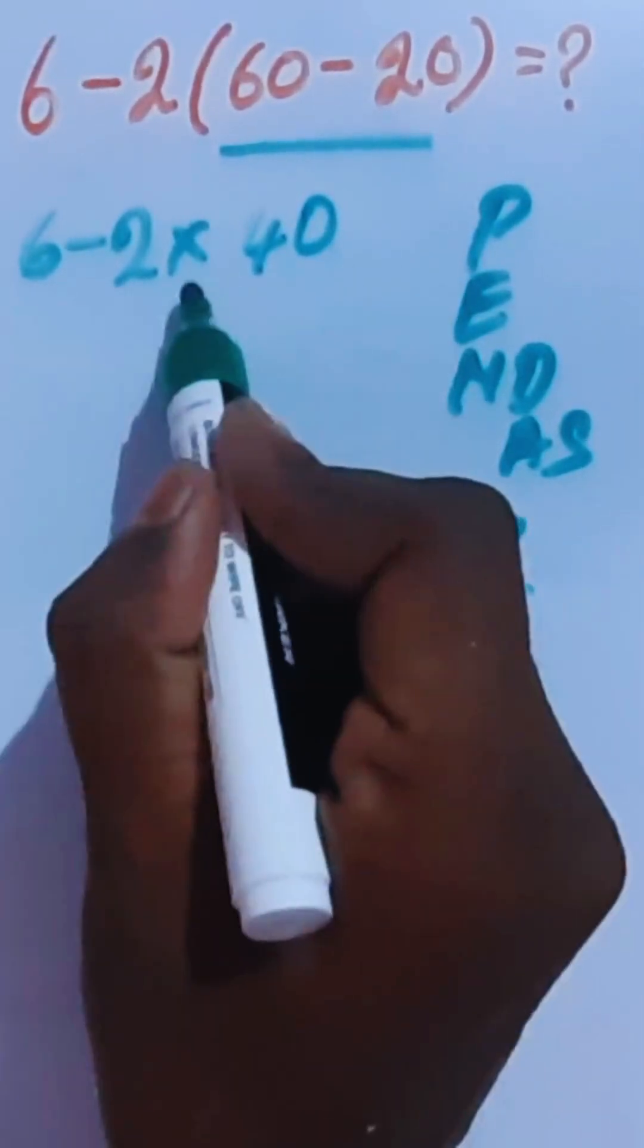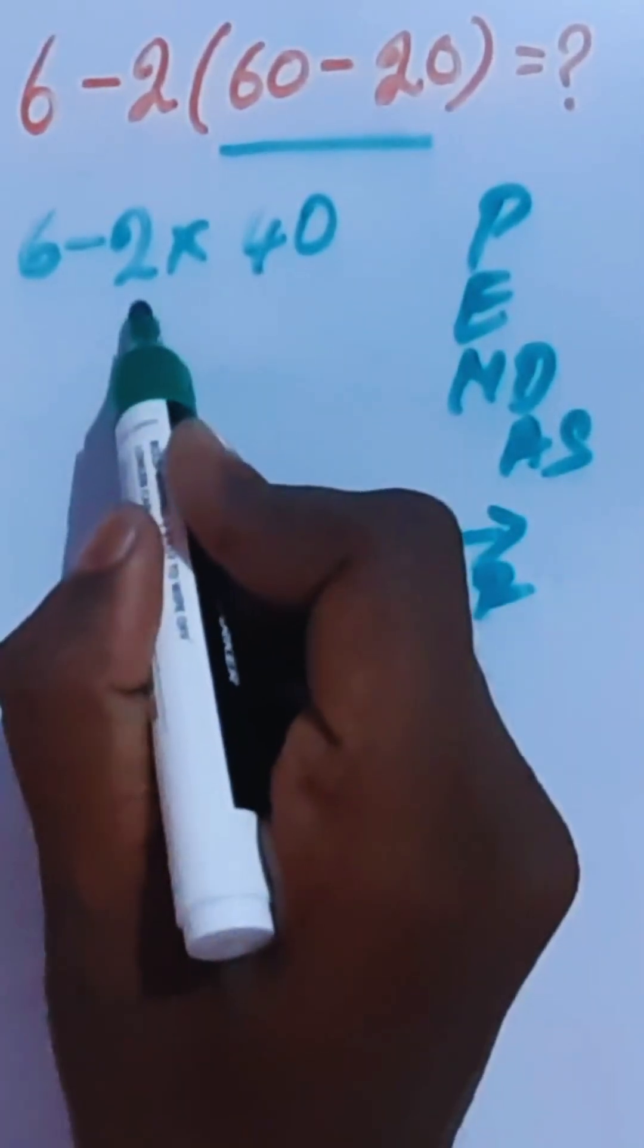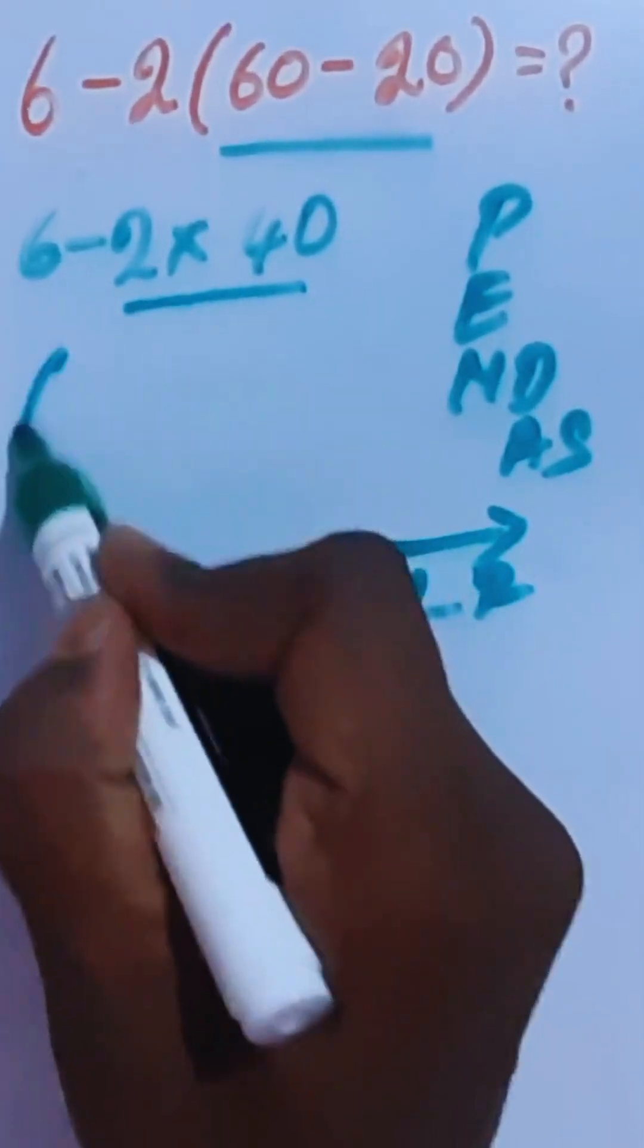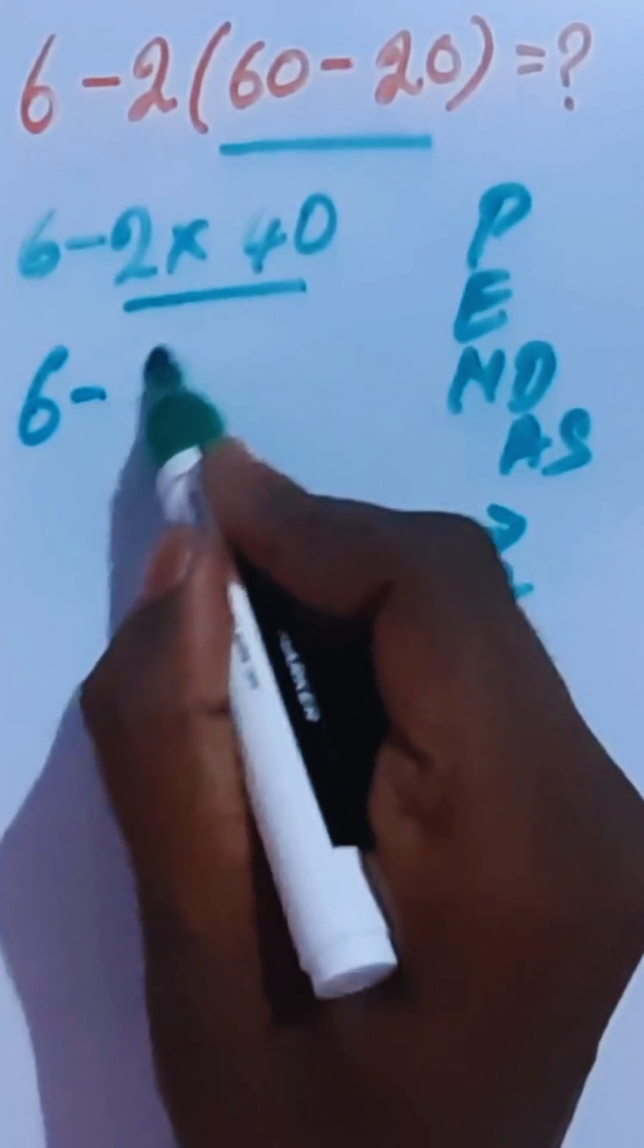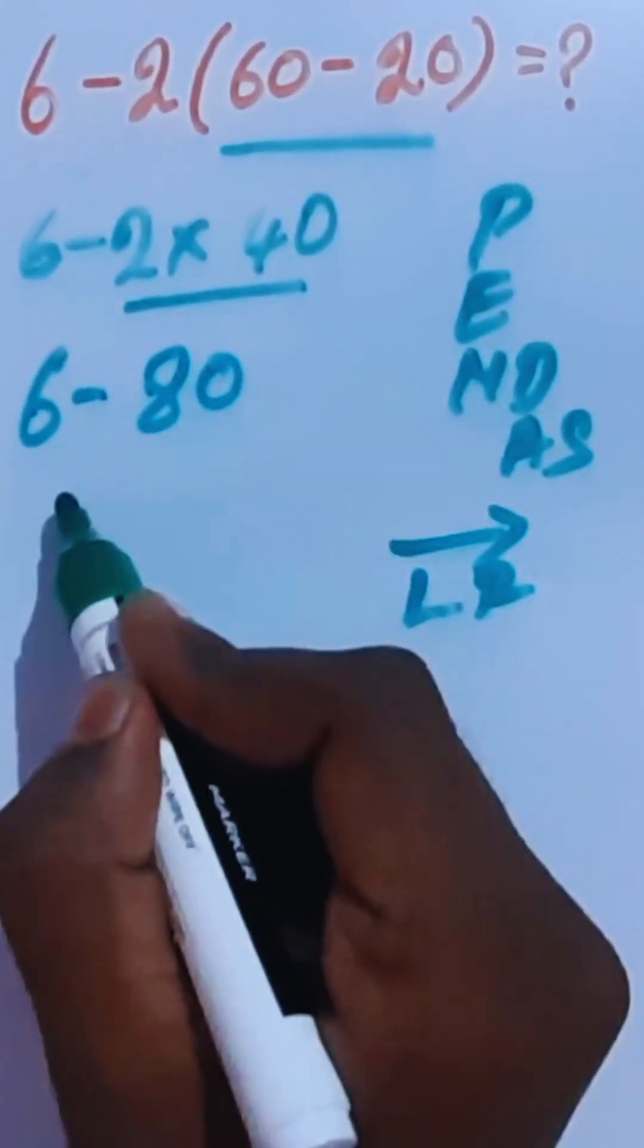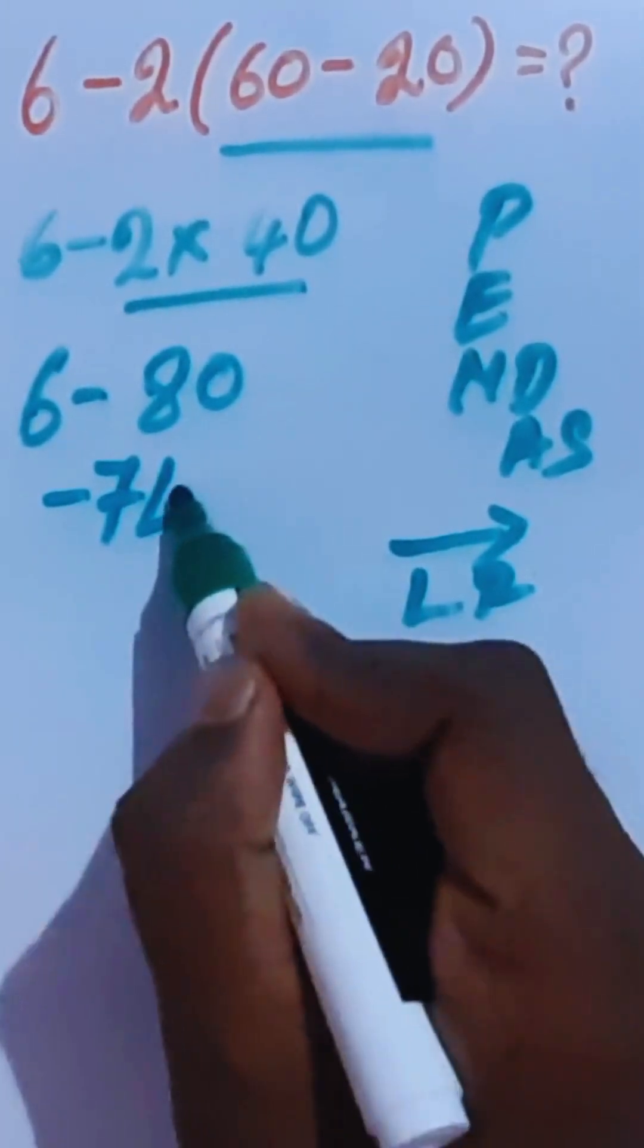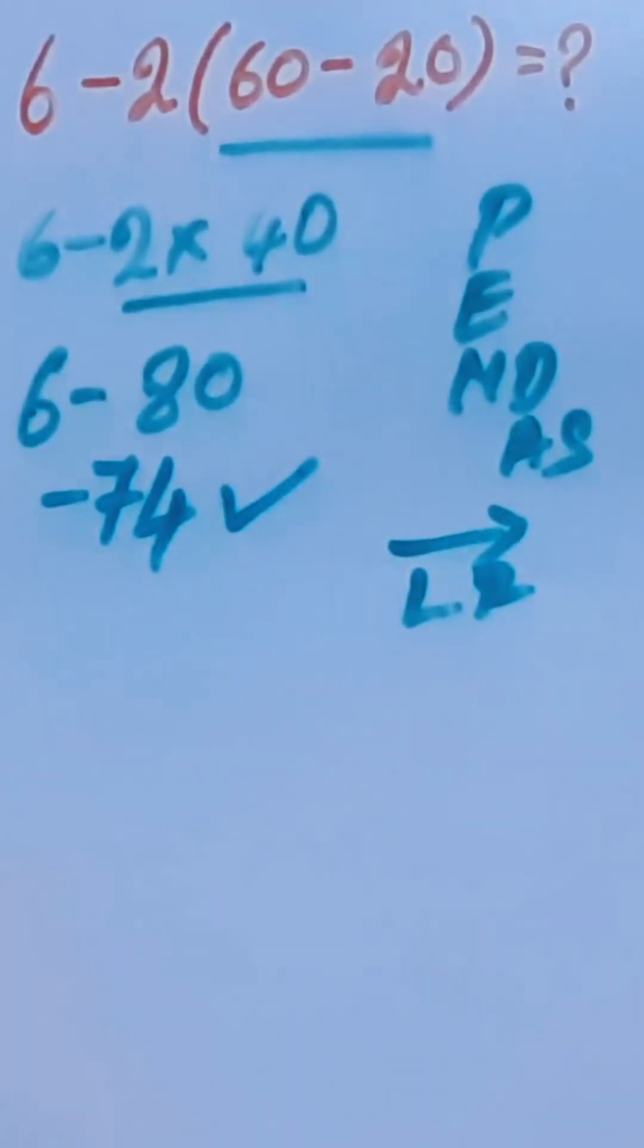Now we have subtraction and multiplication. Multiplication is higher priority than subtraction, so we have to complete this first. So 6 minus 80. Now it is negative 74. This is the correct answer.